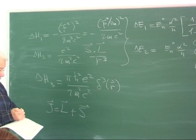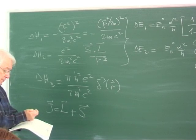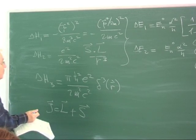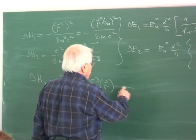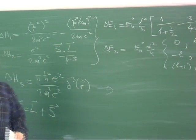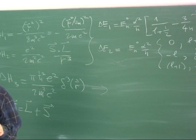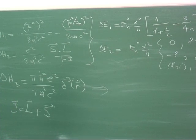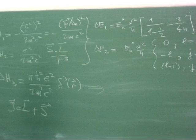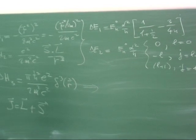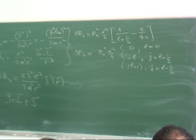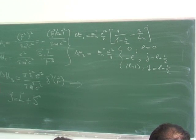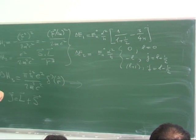Let me proceed with the third term — the Darwin term. We are going to compute the expectation value of delta H3. You may ask why expectation value: what we are supposed to do is compute the matrix representation in the degeneracy subspace, labeled by N. Since the Darwin term has no spin dependence, we can use the uncoupled basis — the N, L, M_L basis is sufficient.